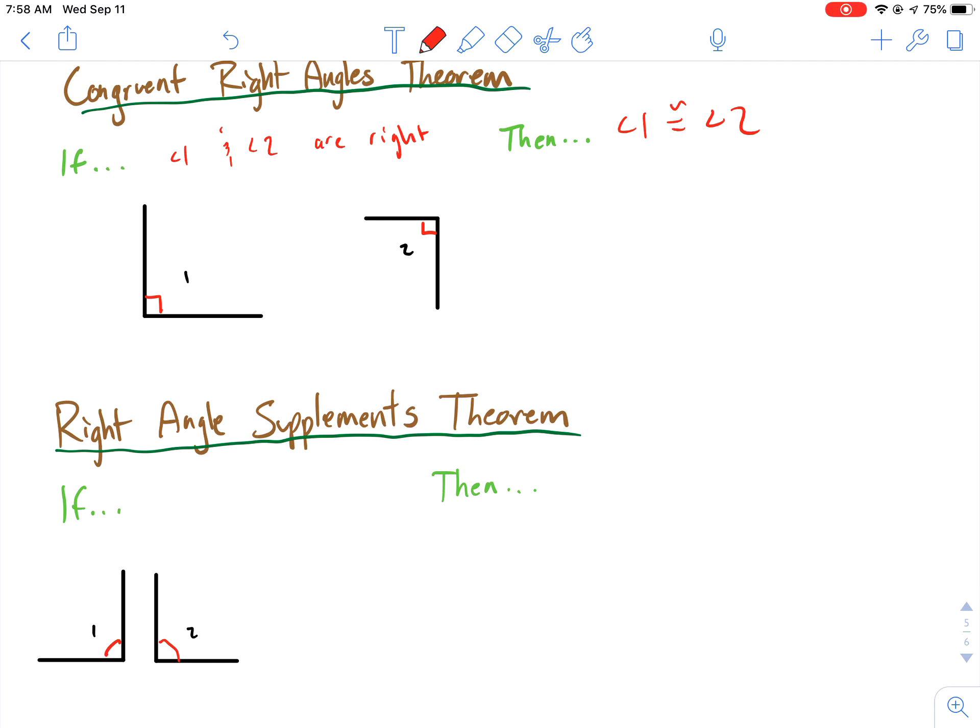Right angle supplements theorem, very similar. If angle 1 and angle 2 are right, that means they're both equal to 90, then that means angle 1 plus angle 2 equals 180 degrees. That means they are supplementary angles.